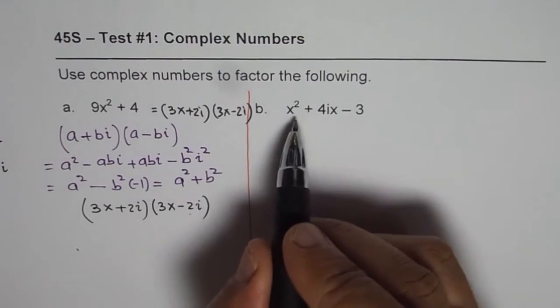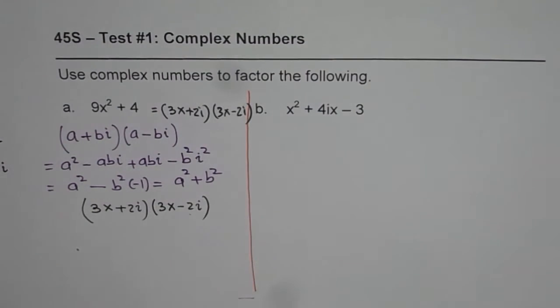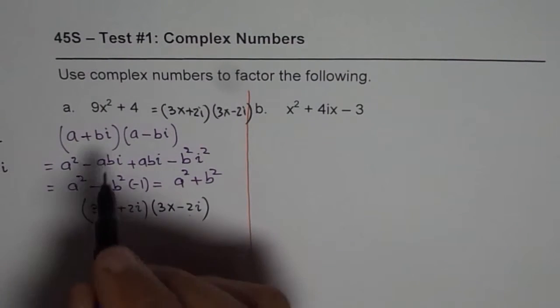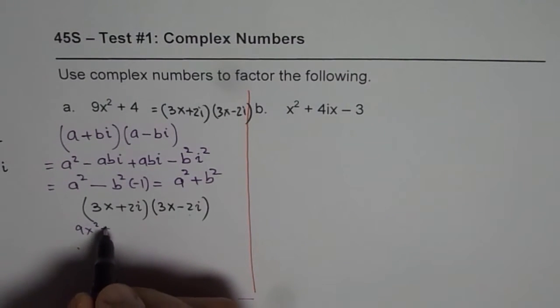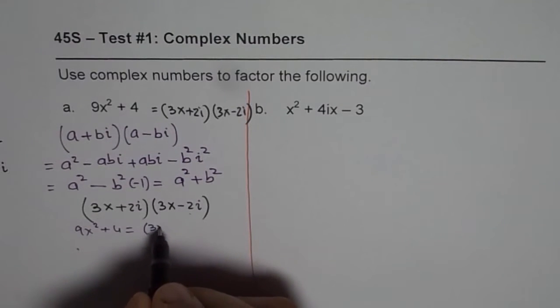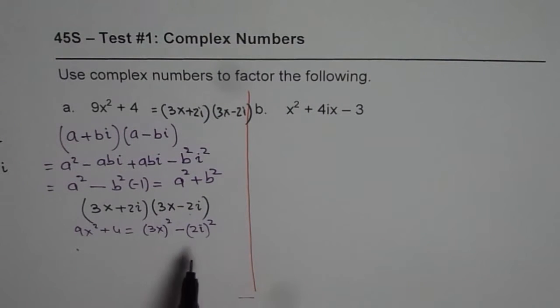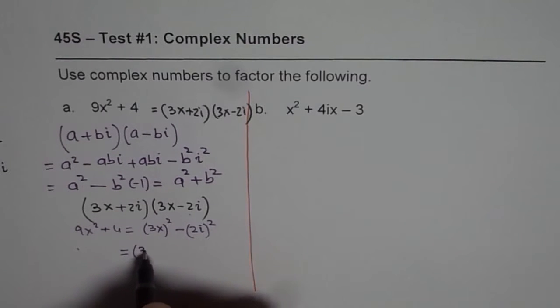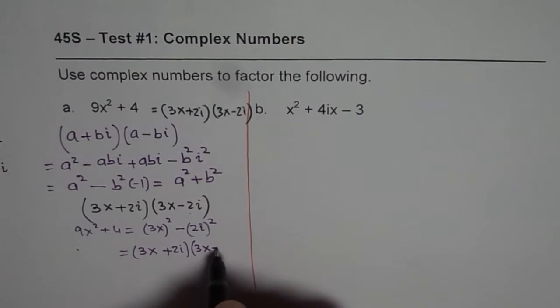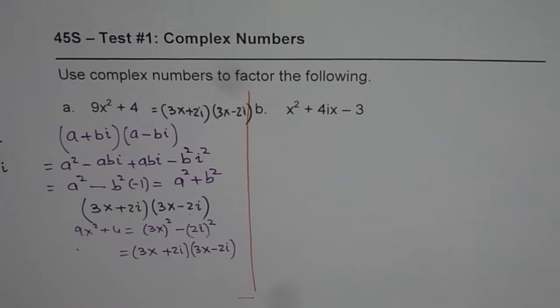Now let's do the other one. Which is in this case some of you can follow this method also. We could write 9x² + 4 as equal to 3x whole square minus 2i whole square. Do you see that? And then apply the learned method, which is this. So we could write this as now equals to 3x + 2i times 3x - 2i. So that is another way of doing it.